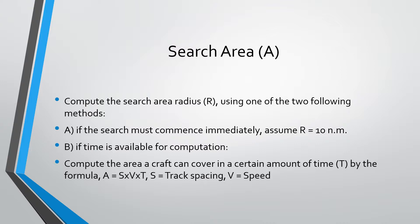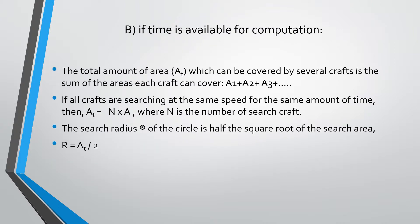Search area equals S times V times T, where T is the time, V is the speed of the craft, and S is the track spacing. The total amount of area, denoted by AT, which can be covered by several crafts, is then the sum of areas each craft can cover.